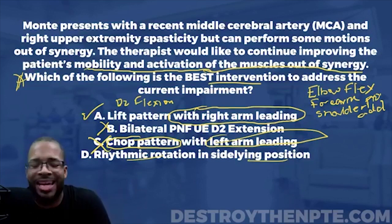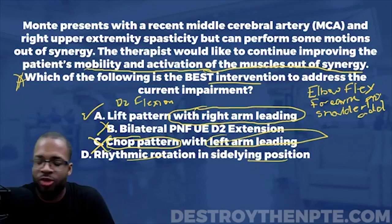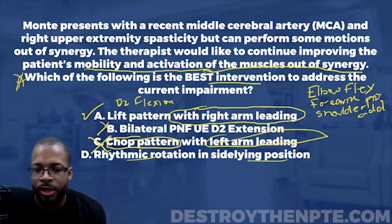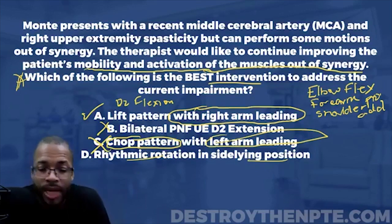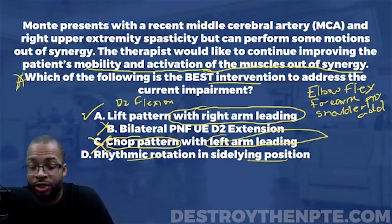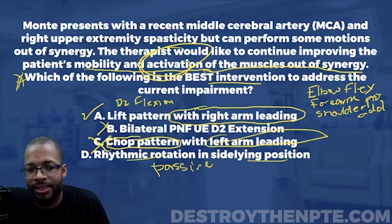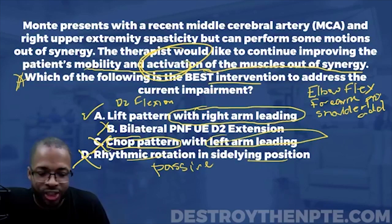Answer D is rhythmic rotation in the sideline position. Rhythmic rotation is a good intervention for reducing spasticity, tone, or rigidity, and is typically used for the trunk — passively rotating the body side to side. However, it doesn't answer the question because we need the patient to actively activate muscles and move out of synergy. Rhythmic rotation is passive, so answer D is eliminated.